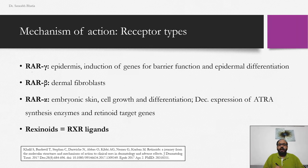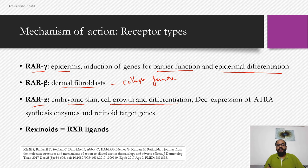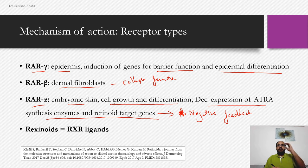Among receptor subtypes: RAR-gamma is present in the epidermis and is responsible for barrier function and epidermal differentiation. RAR-beta is found in dermal fibroblasts and is responsible for collagen formation. RAR-alpha is found in embryonic scale and is responsible for cell growth and differentiation, and also decreases expression of ATRA synthesis enzymes and retinoid target genes — acting as a negative feedback control over retinoid action.